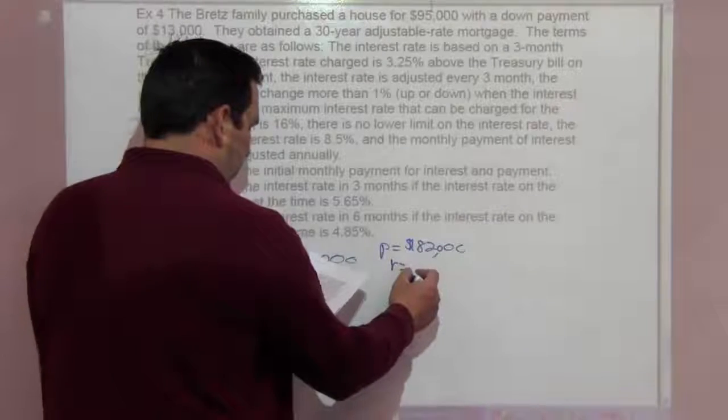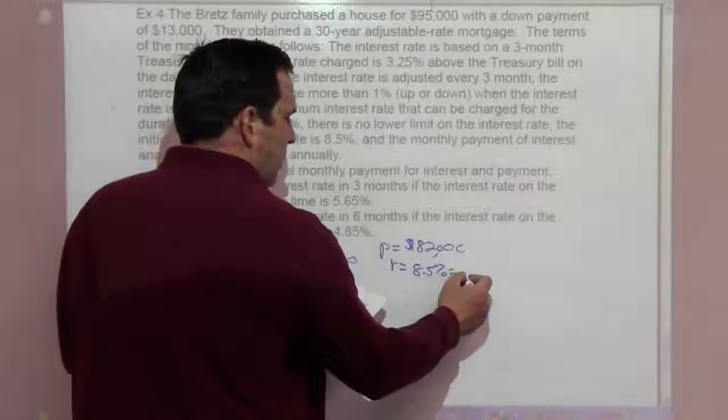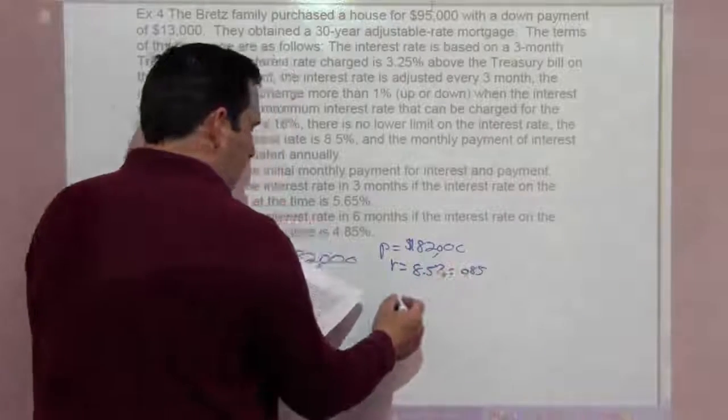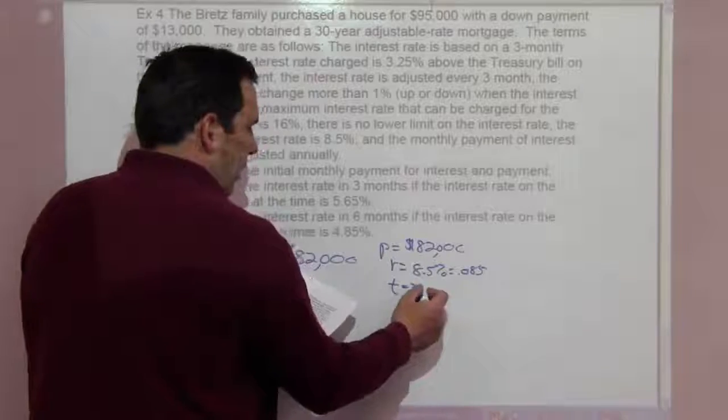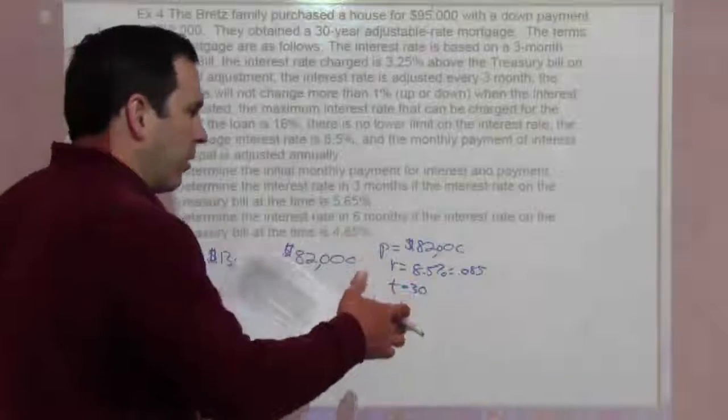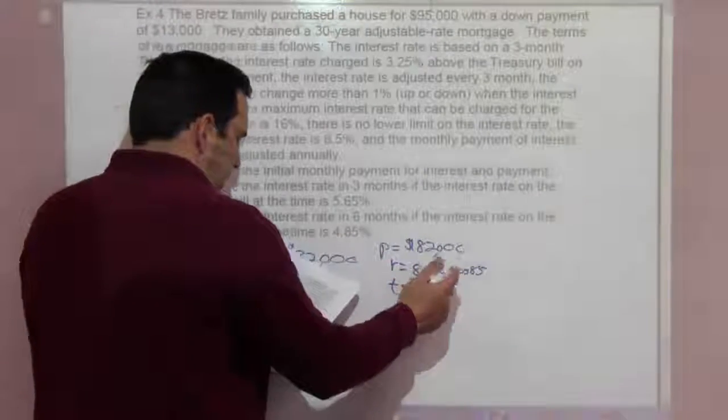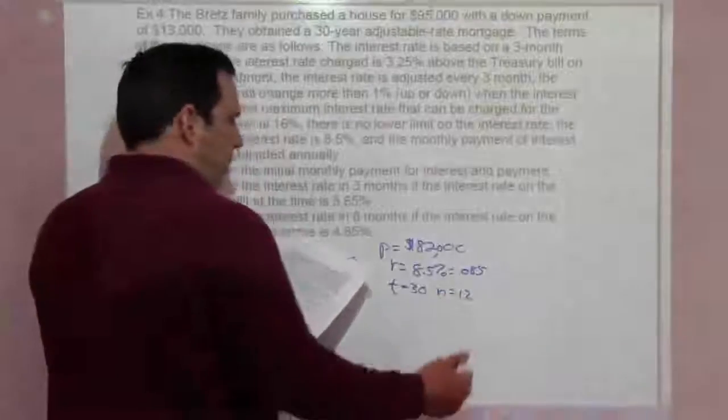The current rate is 8.5% which is .085. Time is 30 years. It started off as a 30-year loan and this is the current rate. So N equals 12 times a year.